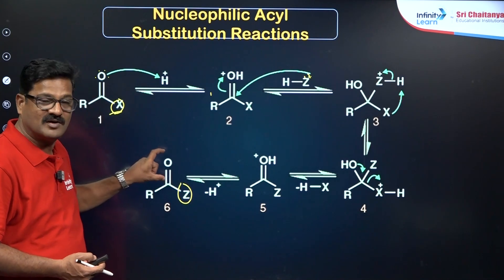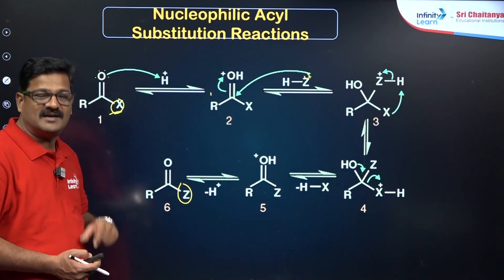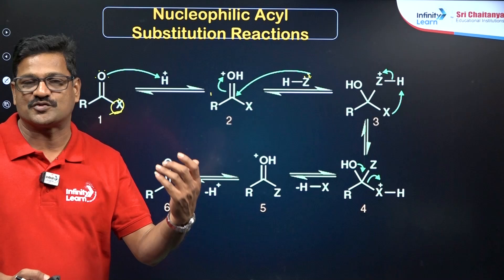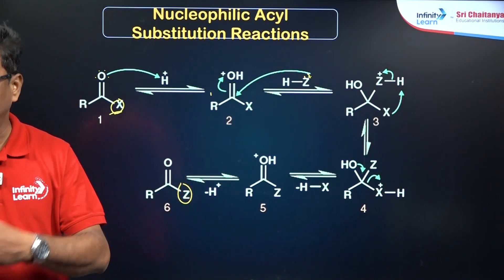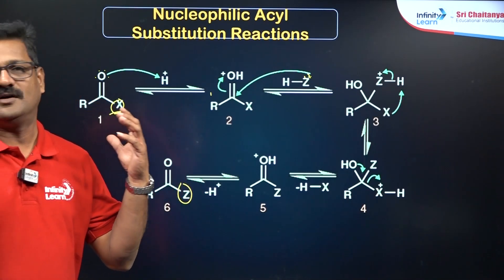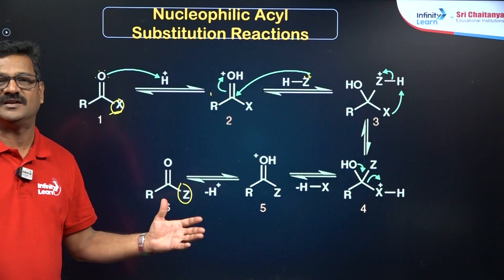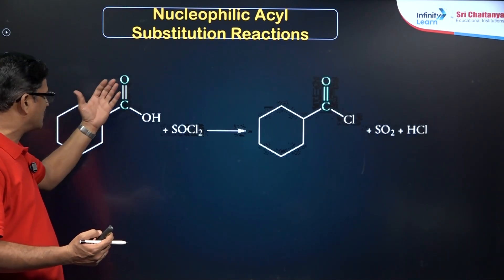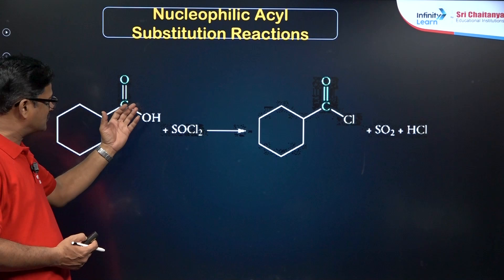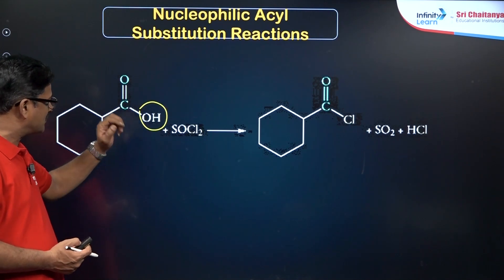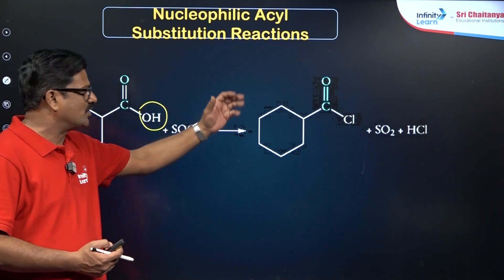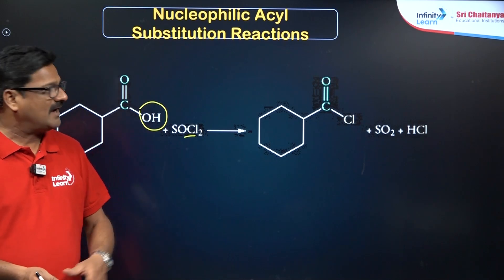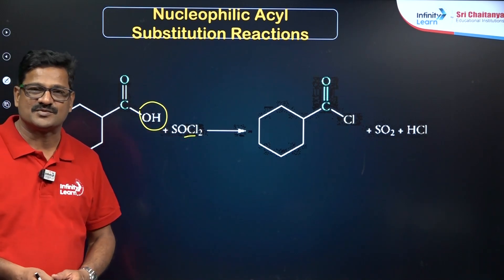This is the mechanism for nucleophilic acyl substitution on the acyl carbon. One famous example: reaction with thionyl chloride on a carboxylic group — the OH group is substituted with chlorine, giving an acid chloride. This is a classic nucleophilic acyl substitution reaction.